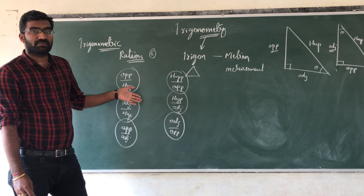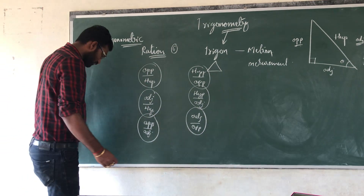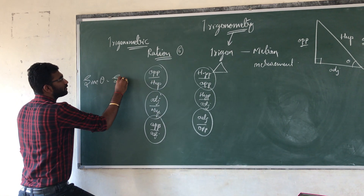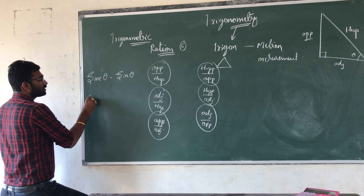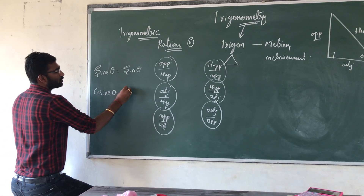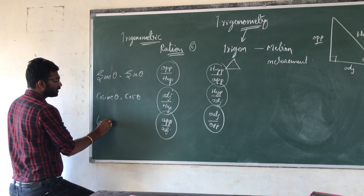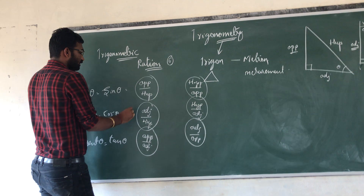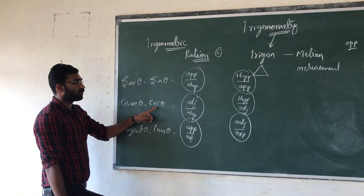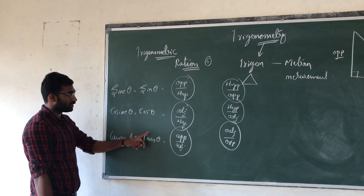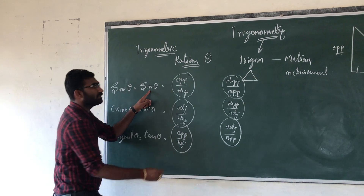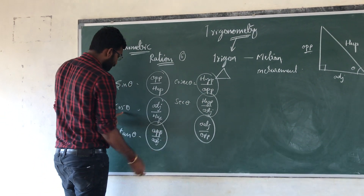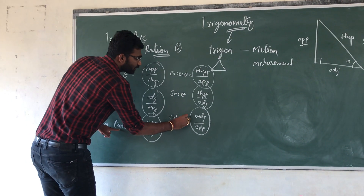Because repeating these ratios every time is difficult, many mathematicians have given names to them. The first ratio, opposite by hypotenuse, is called sine theta, written in short as sin θ. The second, adjacent by hypotenuse, is called cosine theta, written as cos θ. The third, opposite by adjacent, is called tangent theta, written as tan θ. The reciprocals of these are: reciprocal of sin θ is cosecant θ, reciprocal of cos θ is secant θ, and reciprocal of tan θ is cotangent θ.